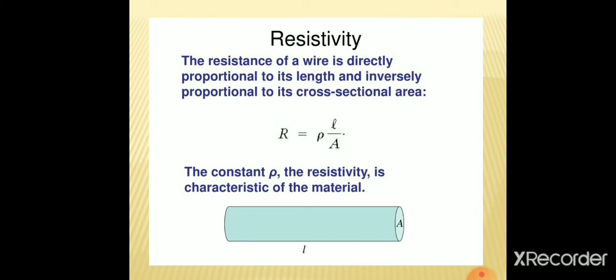This constant is known as rho, which is the resistivity, which is a characteristic of the material. Hence, R is equivalent to rho L by A, where R is the resistance, rho is the resistivity, L is the length of the conductor, and A is the area of cross-section.